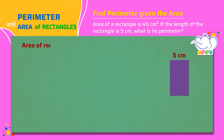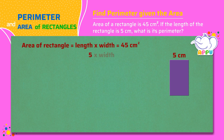Area of rectangle equals length times width. So length times width equals 45. We know the length is 5 centimeters, so 5 times width equals 45. Width equals 45 divided by 5, which equals 9.